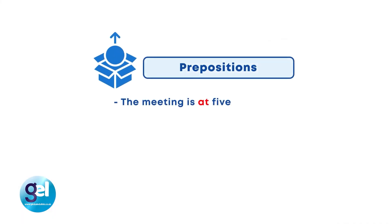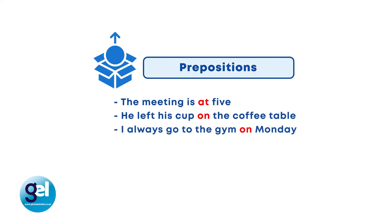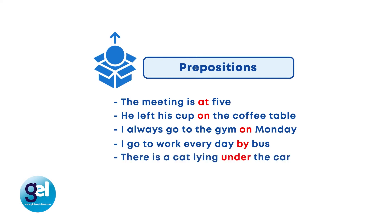Let's look at prepositions. A preposition is a small word that is used before a noun or pronoun and it links it to the rest of the sentence. Prepositions usually show a relationship of time or place. For example: the meeting is at five; he left his cup on the coffee table; I always go to the gym on Monday; I go to work every day by bus; there is a cat lying under the car; and the next meeting will be in June. These little words can cause real problems for learners and they will need a lot of practice and exposure to use them carefully.